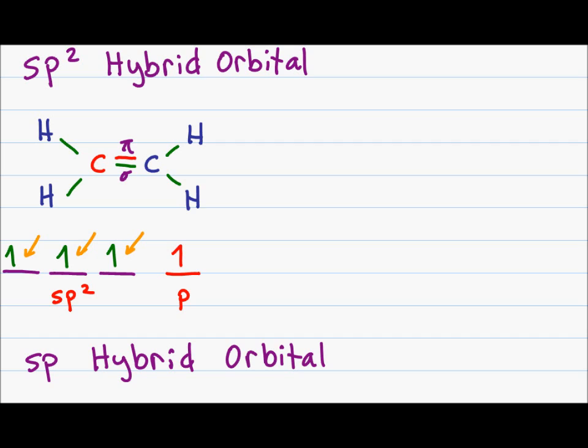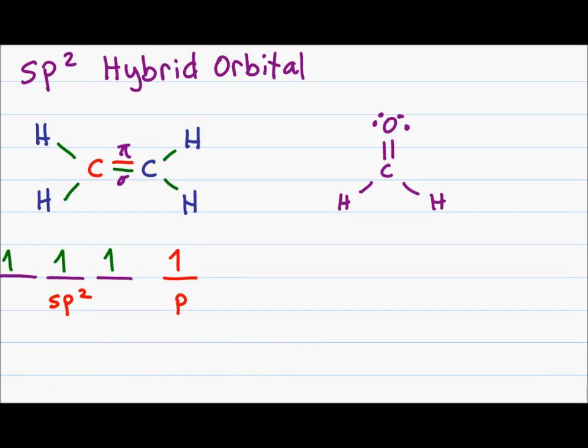The sp2 hybrid orbital is now capable of forming 3 bonds, 1 at each of its hybrid electrons to give a sigma bond, and then 1 bond at its p orbital to give a pi bond. Like oxygen and nitrogen are also capable of sp2 hybridization.